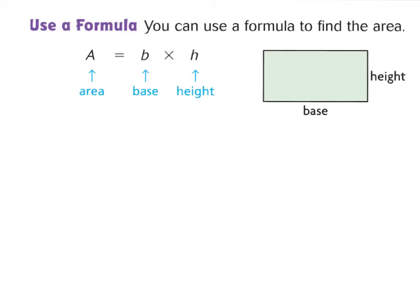Sometimes when we are finding the area of a shape, we can just count the square units inside the shape, but sometimes we won't have the square units, so we'll have to use a formula to find the area. Here's our formula: Area equals base times height. As long as we have the base and the height of a shape, we can find the area. The base is the bottom of the shape — it could also be the top if the sides are equal. The height is how tall the shape is, which is the number on the side.